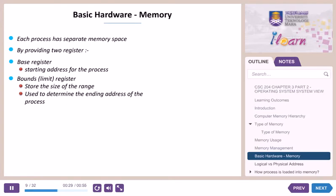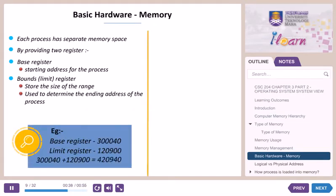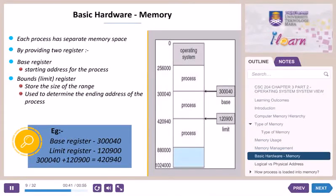These privileged instructions are executed only in kernel mode because the OS runs in kernel mode. For example, given a base register of 300,040 and a limit register of 120,900, when mapped into physical memory by adding the base and limit registers, the result is 420,940, as shown in the diagram.